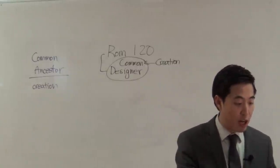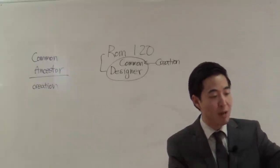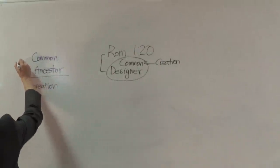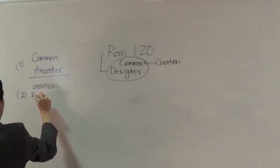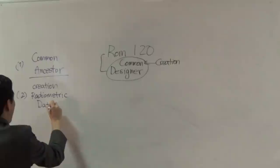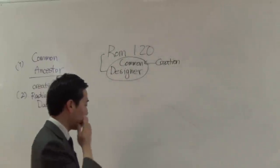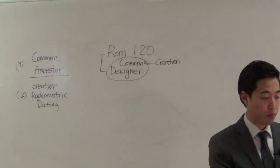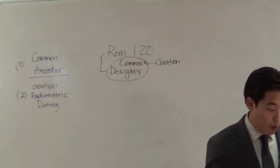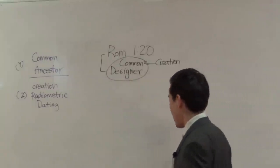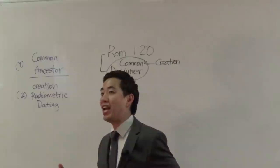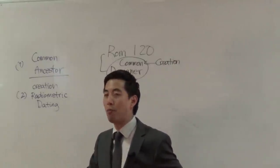Here's another evolution argument: radiometric dating — carbon-14 dating, uranium-lead, potassium-argon, or whatever radiometric dating method they use. So what's the problem with radiometric dating? We're going to look at Hebrews chapter 1, verse 10. It doesn't matter which dating method it is — the method of measurement is scientific and logical. But there's a problem.